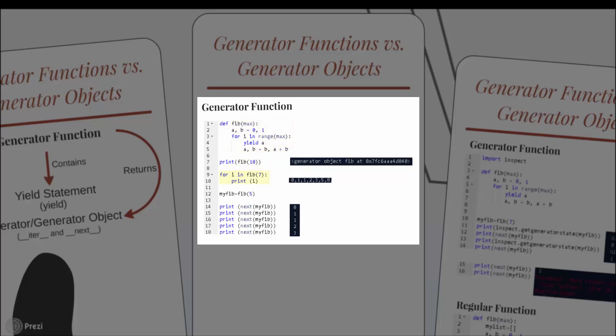In this example, the for loop executes the generator object and returns the first seven numbers of the Fibonacci sequence. Behind the scenes, the for loop implicitly calls both magic methods __iter__ and __next__ of the generator object, because a generator object is an iterator object.